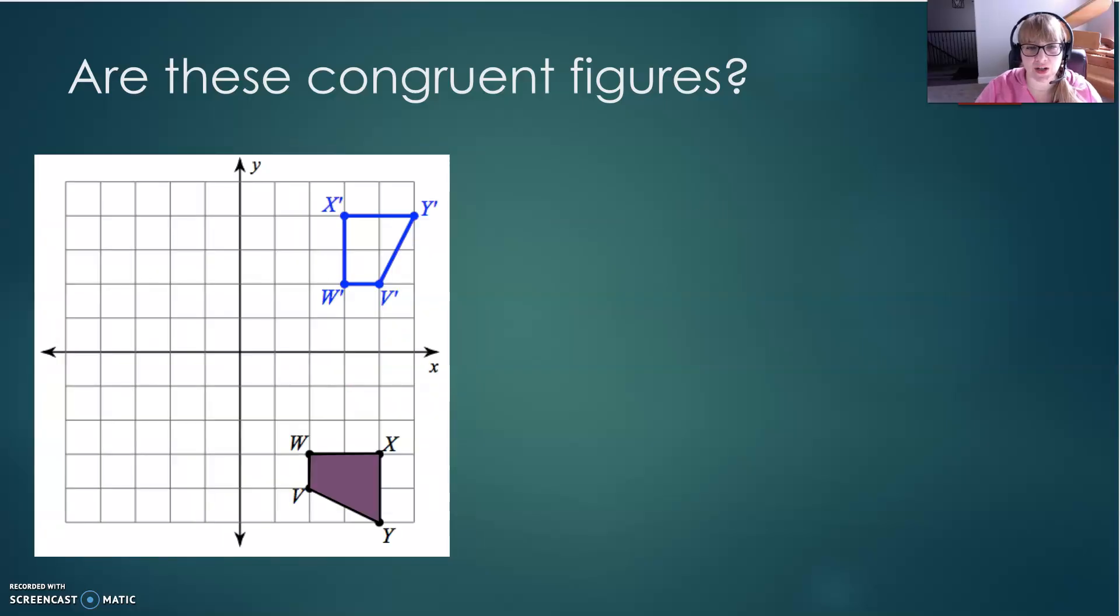What about these figures? Are these figures congruent? Can I get from one to the other through a series of translations? Let's test it out and see. First, I would have to rotate it. After rotation, then I could translate it into place. So yes, these figures are congruent because one was a rotation of the other.